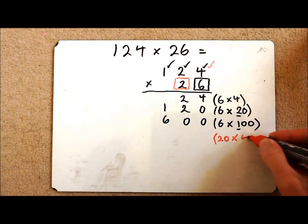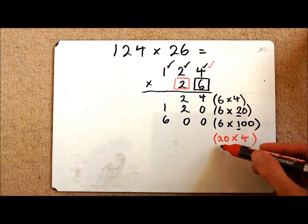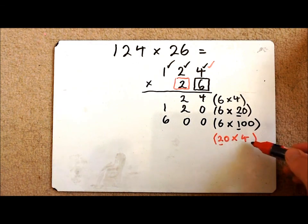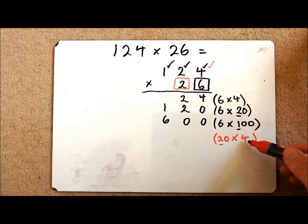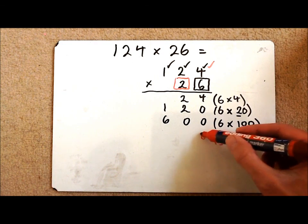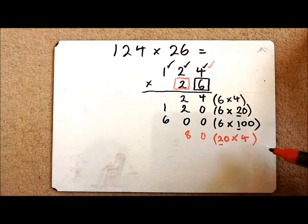So 20 times 4. Well I know what 2 times 4 is. 2 times 4 is 8 and I need to make it 10 times bigger. So the answer is 80.